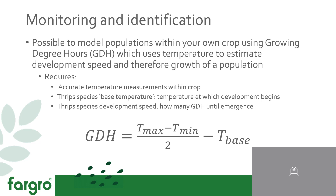Once you have an idea about the presence in your crop, it's possible to monitor populations using growing degree hours calculations. This uses temperature to estimate development speed and therefore population growth, allowing you to get a handle on pest intensity. It requires you to accurately measure temperature within the crop, know the thrips species and their base temperature — the temperature at which development begins — and know the development speeds, or how many growing degree hours until emergence. Using this calculation, you can get an idea of when thrips are going to start emerging and when you'll start to see pressure on your crop.